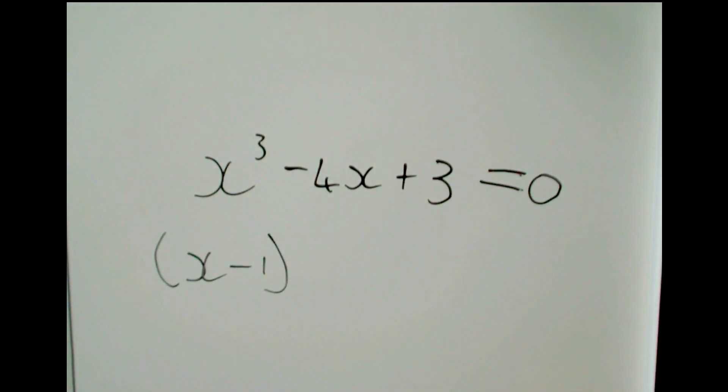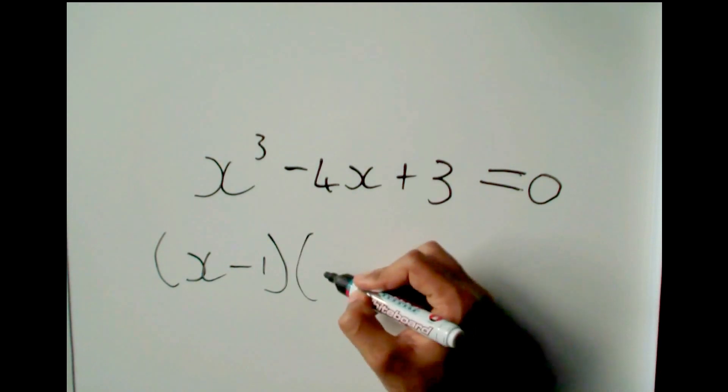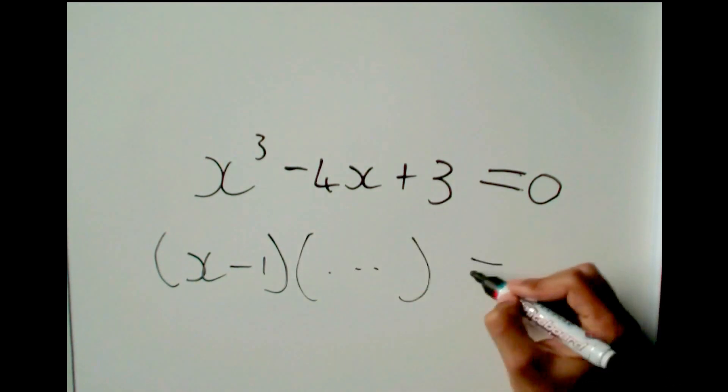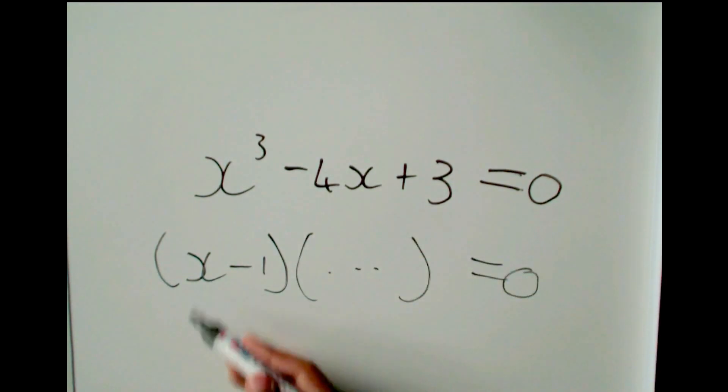So if this was factorized, and positive 1 was a root, we would have the bracket x minus 1 in the solution. And then we would have something else here. This would say x is equal to positive 1, and x is equal to whatever happens in this corner here.